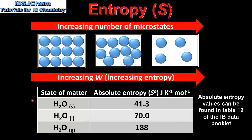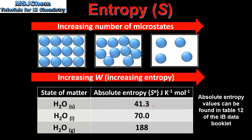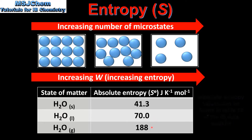We'll end the video by looking at the absolute entropy of H₂O as a solid, liquid, and gas. As we can see, the absolute entropy value increases as we go from solid to liquid to gas. This is because there are a greater number of microstates in gases when compared to liquids and solids. Therefore, we see an increase in entropy as we go from solid to liquid to gas.